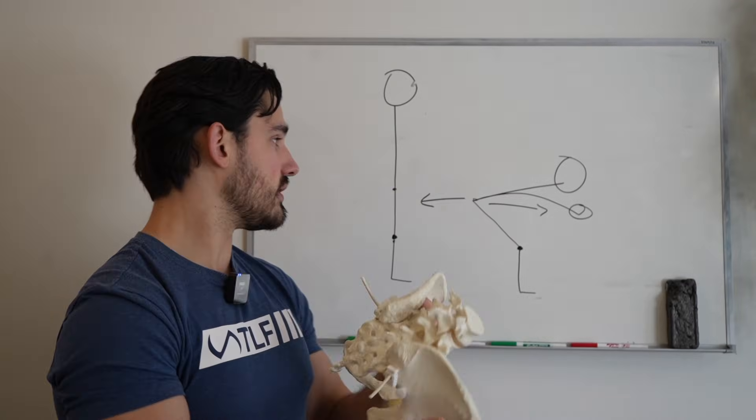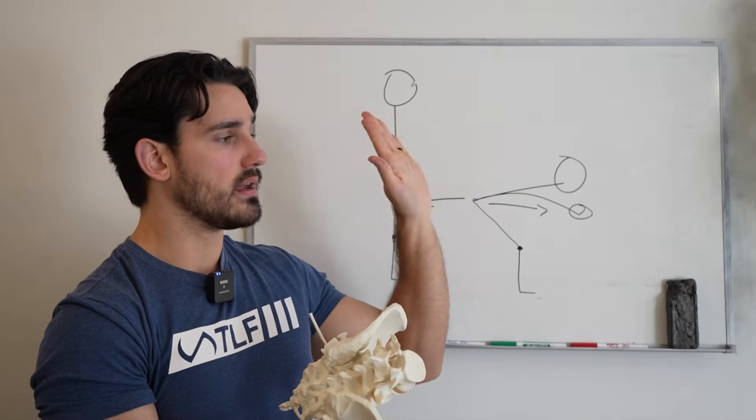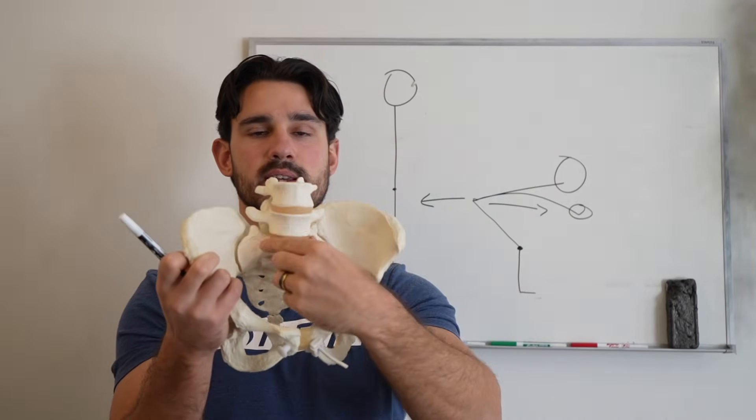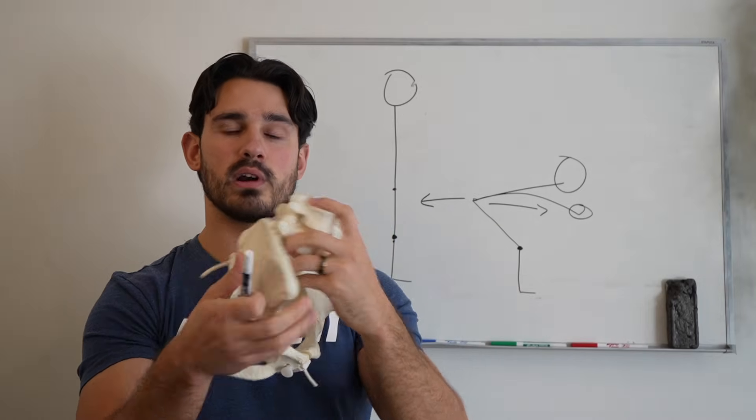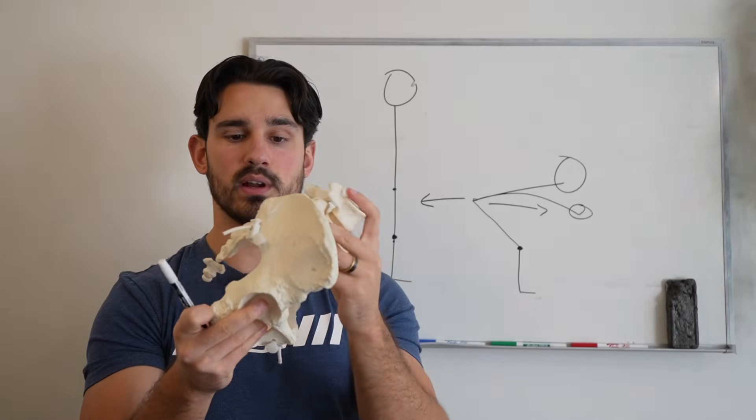And what we're also trying to do is we're also trying to keep this spine pretty much rigid. So here is basically the lower part of the spine. What we're trying to do for the most part, if we're trying to train the hips, is keep this thing rigid.